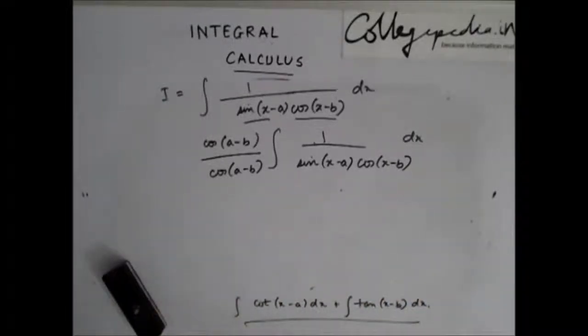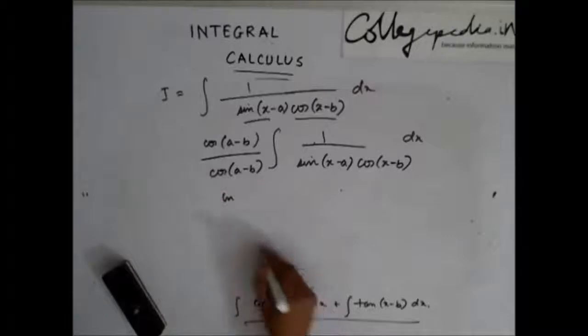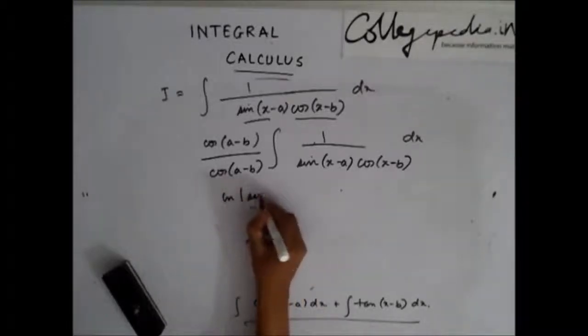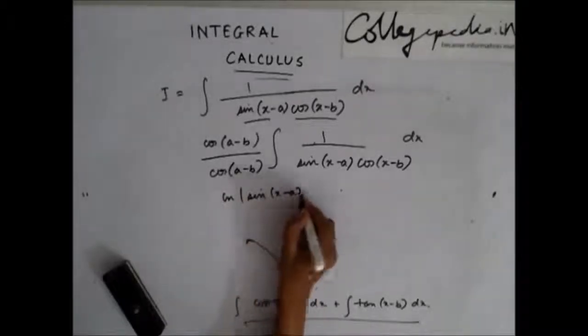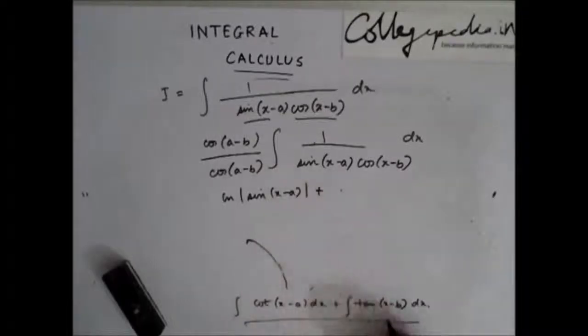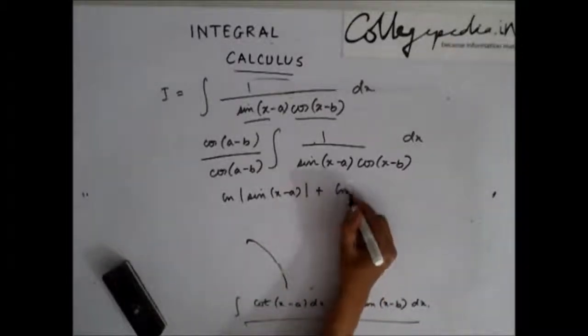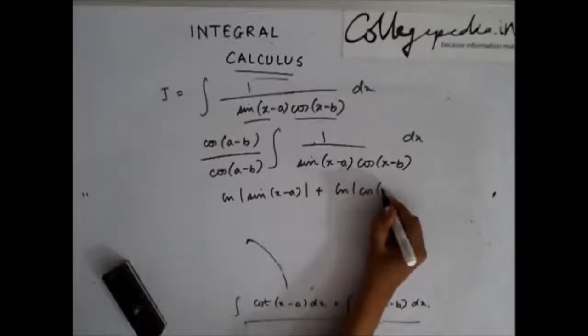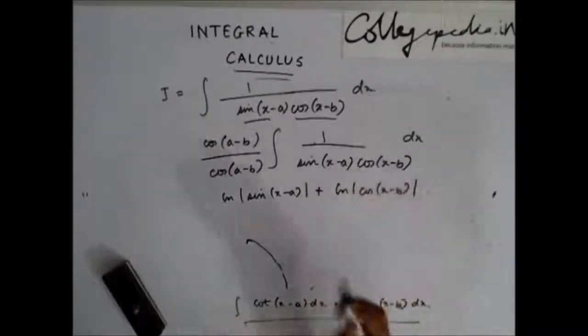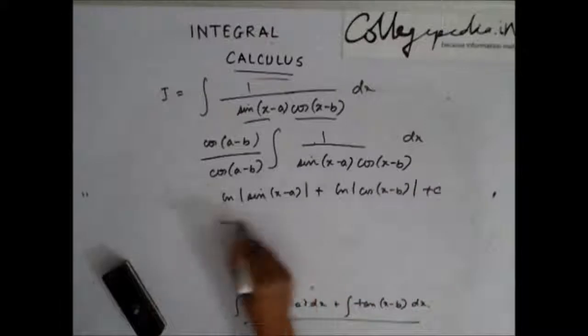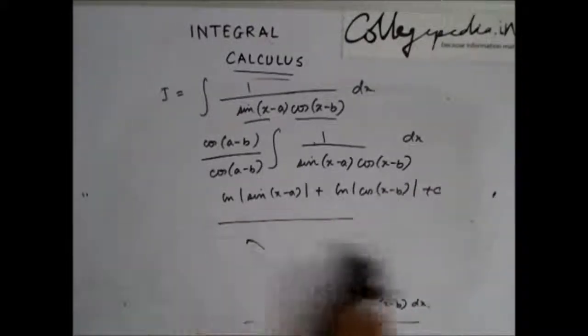So you know that integration of cot x minus a is ln of sin x minus a. So this one is ln of sin of x minus a, and integration of tan of x minus b will be ln of cos of x minus b plus a constant c. So this is my solution.